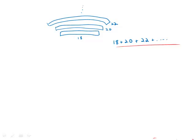18 plus 20 plus 22 plus etc. Now, if we had any idea where this ended, either we knew the final term or we knew the total number of terms, then we'd be able to sum this sequence.